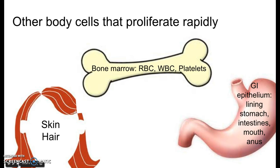Then there's bone — think bone marrow. We've talked about this before with anti-infectives and with HIV. The bone marrow makes RBCs, WBCs, and platelets, and again, those are rapidly proliferating cells. So unfortunately, the things made in the bone marrow get knocked out when we're using chemotherapy too.